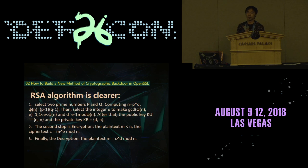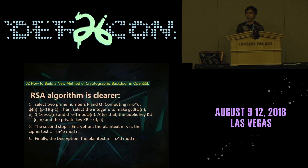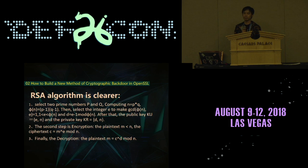Today, I will build a backdoor in the RSA algorithm. The RSA algorithm is quite clear. First, select two prime numbers P and Q and compute N. After that, we can get a public key and a private key. The second step is encryption, where we get a ciphertext C. And finally, after decryption, we can get the plaintext M.